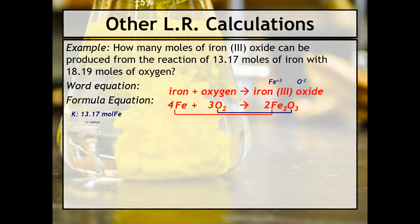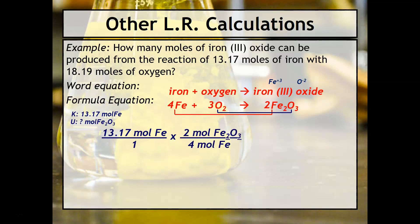Our known is 13.17 moles of iron and our unknown is moles of iron 3 oxide. This is a mole-mole calculation because we're going from moles of one substance into moles of another substance, so these calculations are a little easier because you don't have to calculate molar masses. We'll start with 13.17 moles of iron and use the mole ratio of 4 moles of iron to 2 moles of iron 3 oxide. According to this calculation, we should get 6.585 moles of iron 3 oxide.